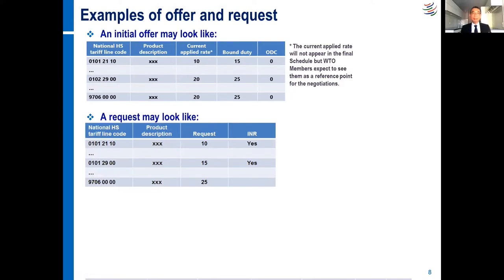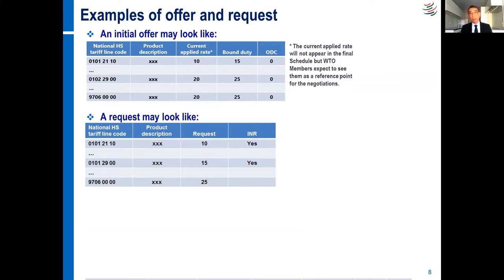That's what the acceding member put on the table. The WTO members have a look at this offer and come back with a request. There are no fixed rules, but this is how a request could look like. For the first product 01012110, the applied rate was 10% and the acceding member proposed to bound its duty at 15%. This WTO member has an interest in that product, and since the applied rate is 10%, there is no reason to accept a commitment at 15%, and therefore they request 10%. They also requested to be granted the initial negotiating rights in case this country has to renegotiate its commitments.